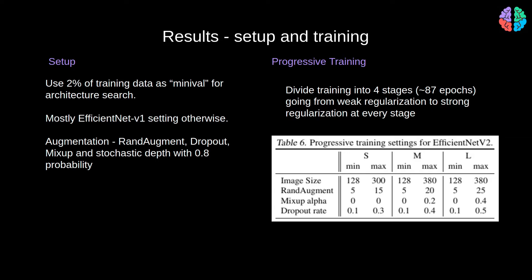The training setup for EfficientNet is interesting because unlike standard models, we need to do an architecture search. For this, they split 2% of the training data into what they call a mini-val and use it for architecture search. In terms of optimization, LR scheduler, etc., they mostly follow the EfficientNet version 1 setting. For the augmentation, they mostly do rand augment, mixup, dropout and stochastic depth with a probability of 0.8.